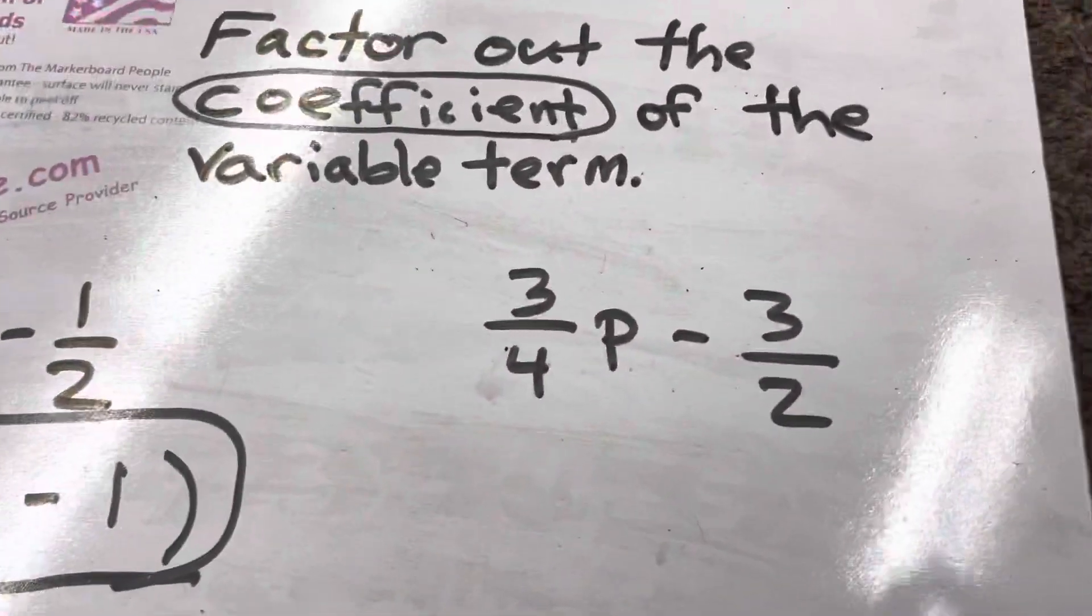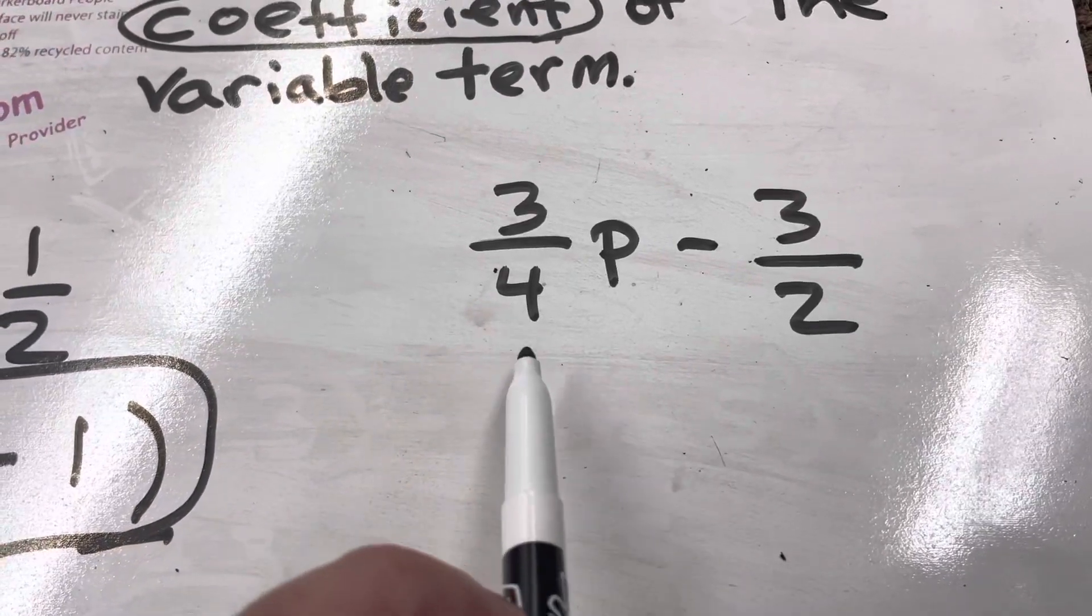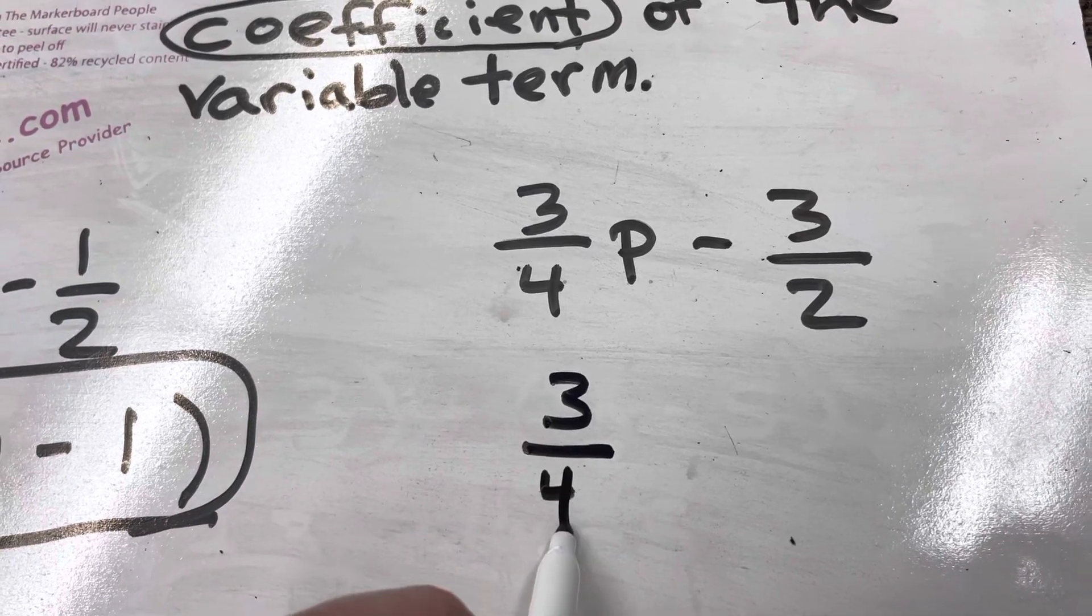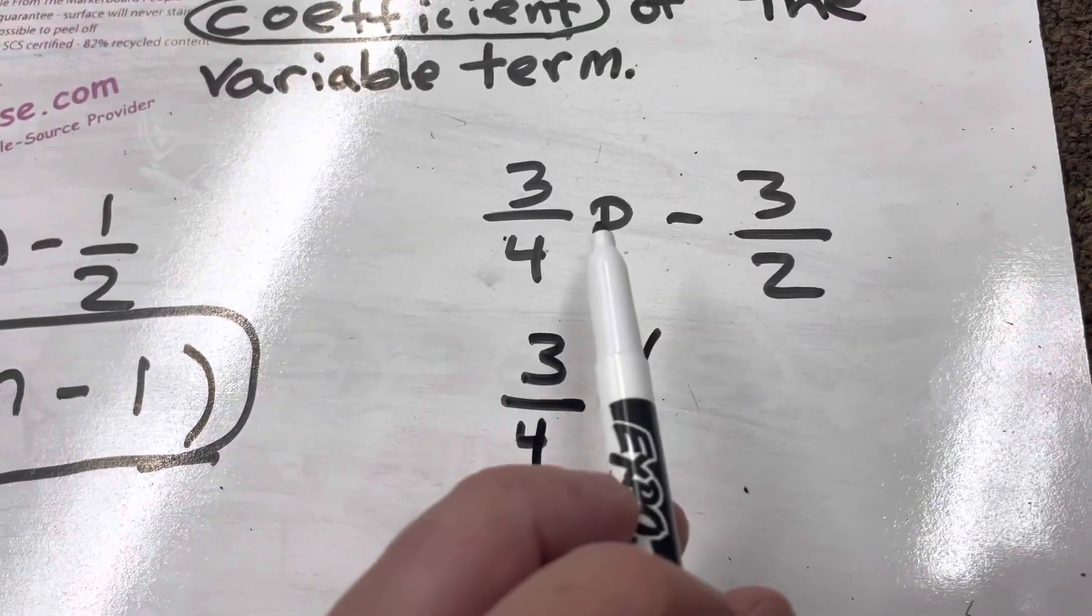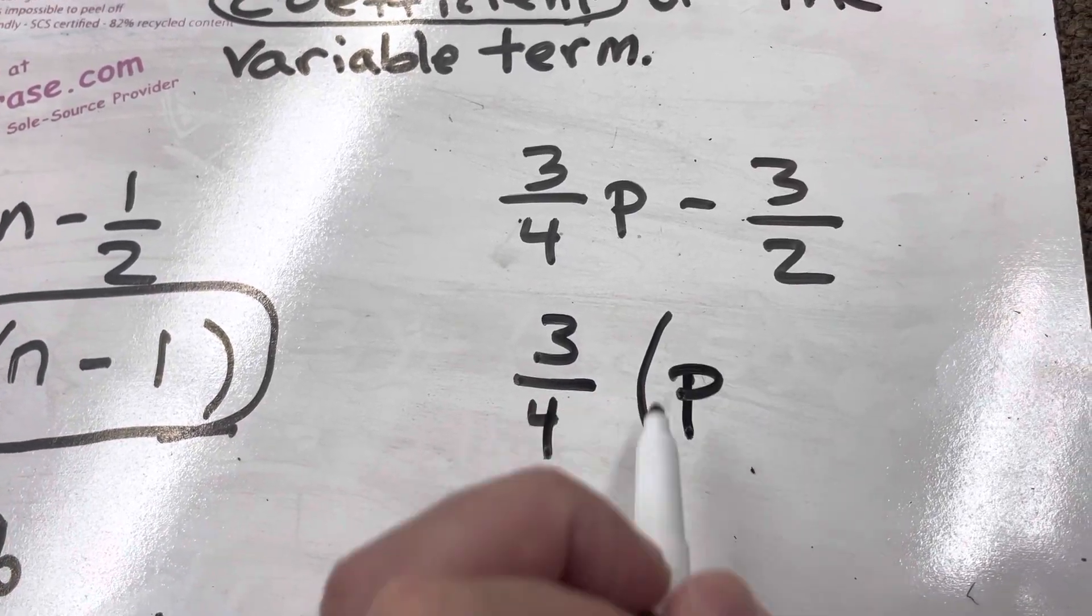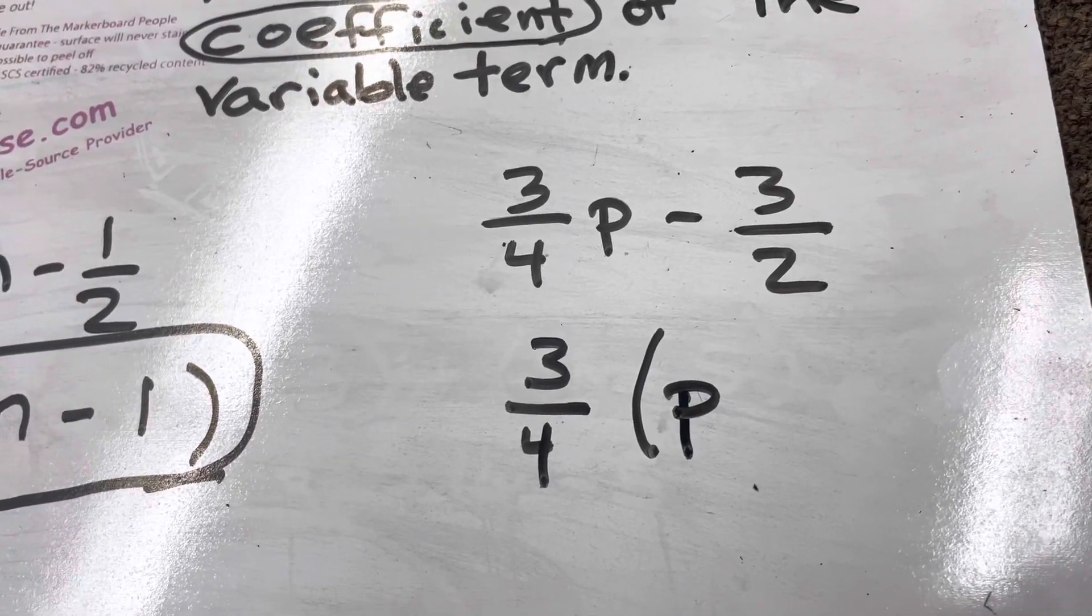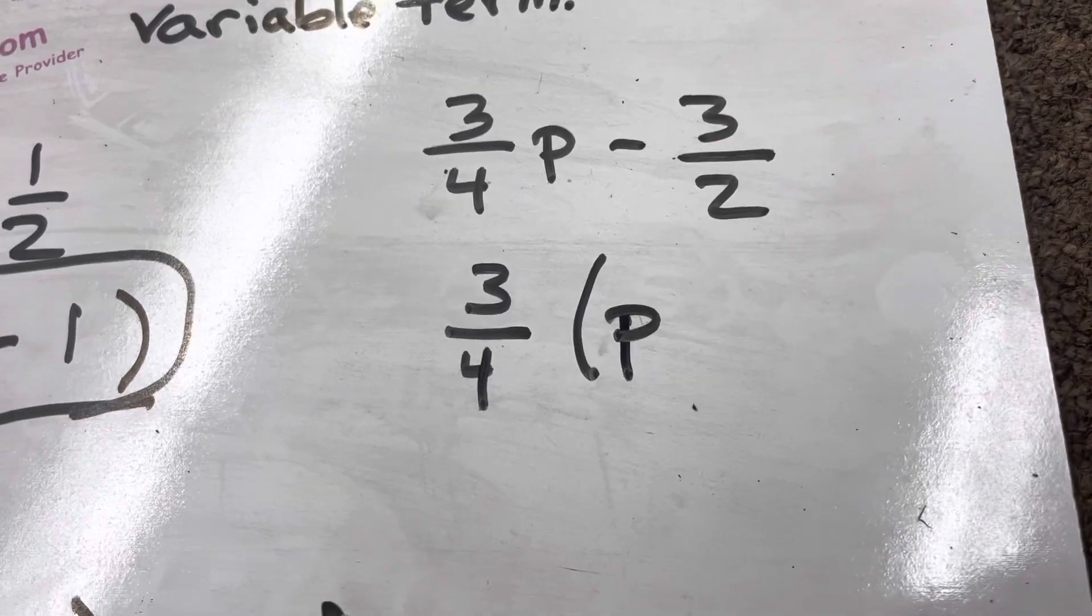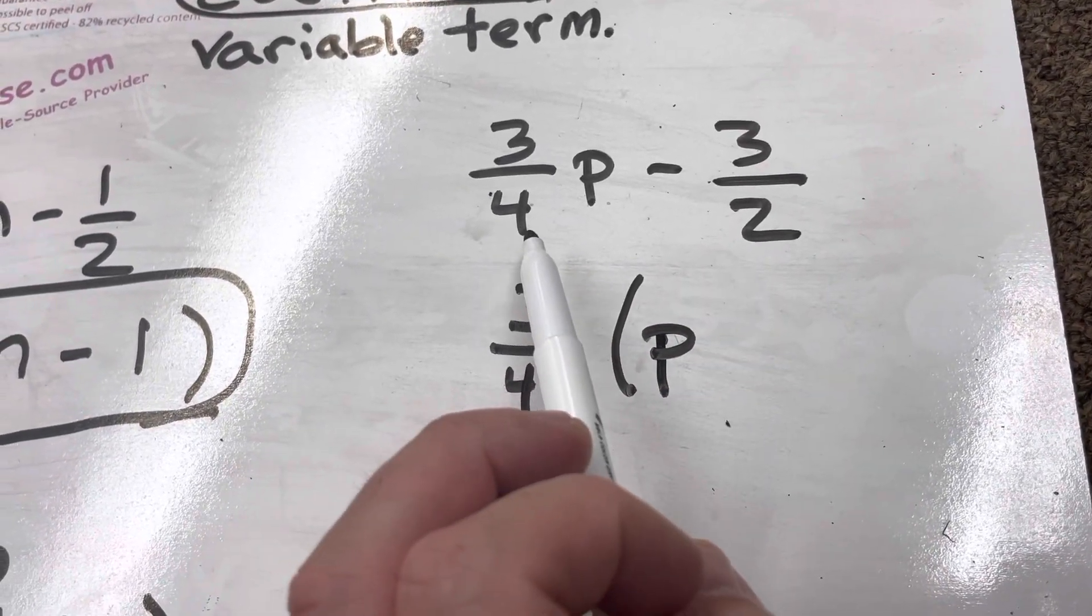All right, third example. 3 fourths P minus 3 over 2. Well, the coefficient is this 3 fourths. So that's what's going to go outside of the parentheses. When I take 3 fourths P and divide it by 3 fourths, that just leaves me with P. That's going to be important for you to understand as we get into solving equations and all sorts of other things in the future.